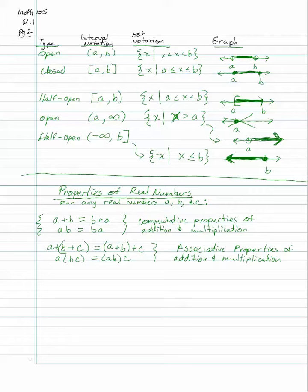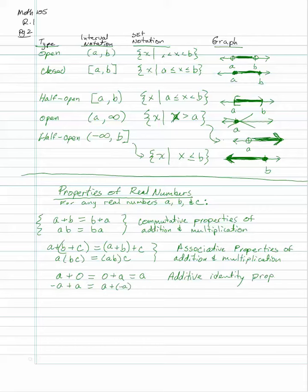The additive identity property says any number plus zero equals the original number. That's the identity for addition. The additive inverse property says a number plus its opposite equals zero — for example, A plus negative A equals zero.